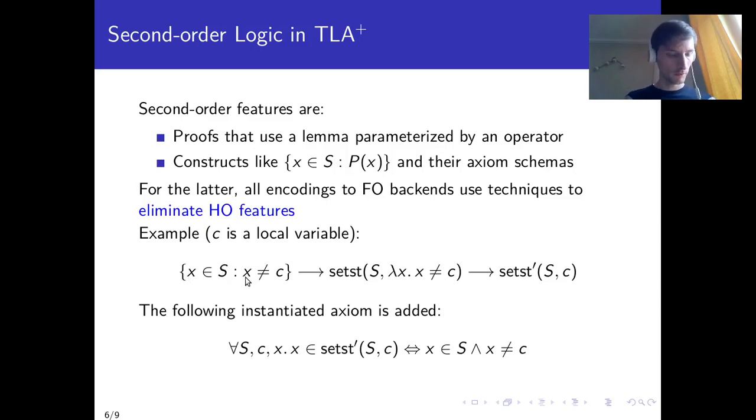So if I want to eliminate the set comprehension for this predicate, I can start by rewriting it as a second order application, so with one argument being the base set, but the other one being the predicate p. And then what I need to do is to replace this application by another application with a new declared operator, which is specialized for this predicate. And I also need to provide the instance of the axiom schema for set comprehension for that predicate, and that's it.